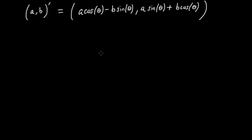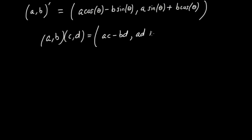You may be wondering what all this has to do with complex numbers. Returning to the definition of complex number multiplication — AB times CD gives AC minus BD in the first component and AD plus BC in the second — there's a certain similarity between the newly rotated vector and this formula. If I let C equal cosine theta and D equal sine theta, I get exactly this rotation formula.